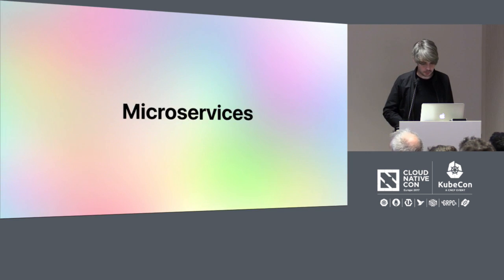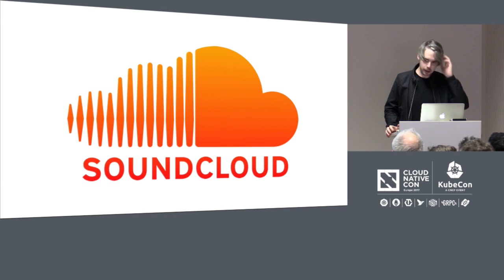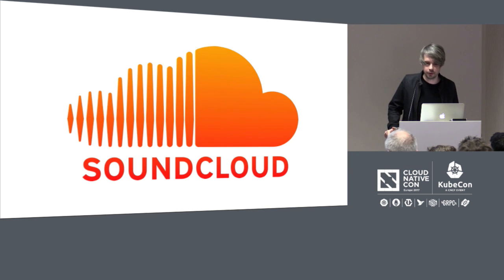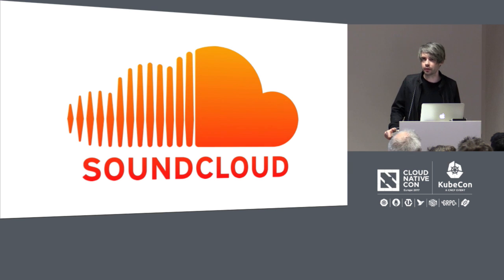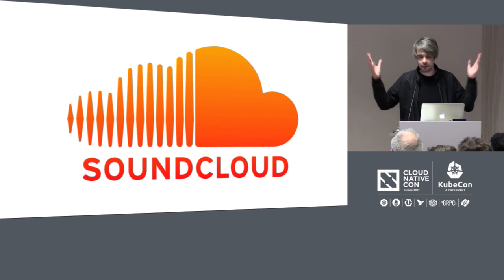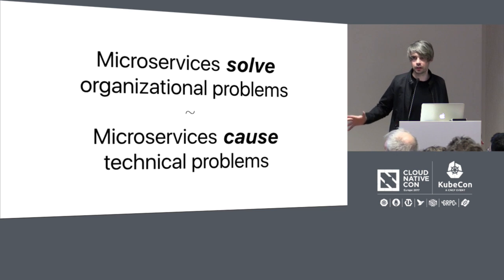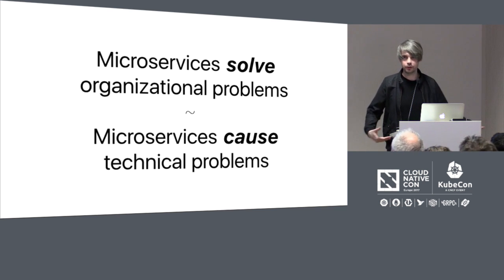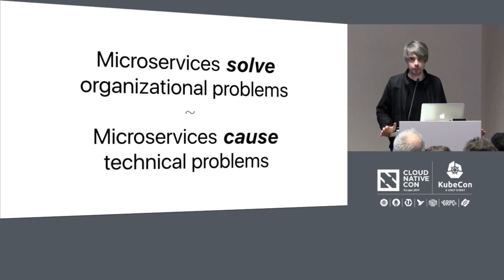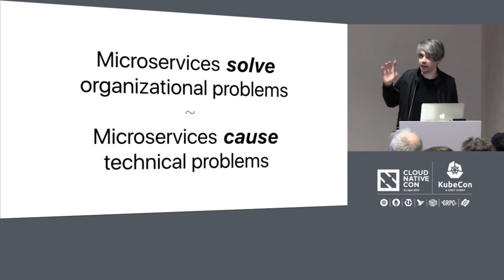Now let's turn our attention to microservices — part of the cloud native computing breakfast. My story with microservices begins at SoundCloud. We were one of the early adopters — we did microservices before they were called that, still called SOA back then, and then slowly they became microservices. Us, Spotify, and Netflix were some of the first. The one lesson I want to distill everything down to is that microservices solve problems in your organization, but they cause technical problems — they solve some technical problems but create far, far more. Choosing to opt into a microservice architecture is something you should do only when you know you need to solve latent organizational problems.